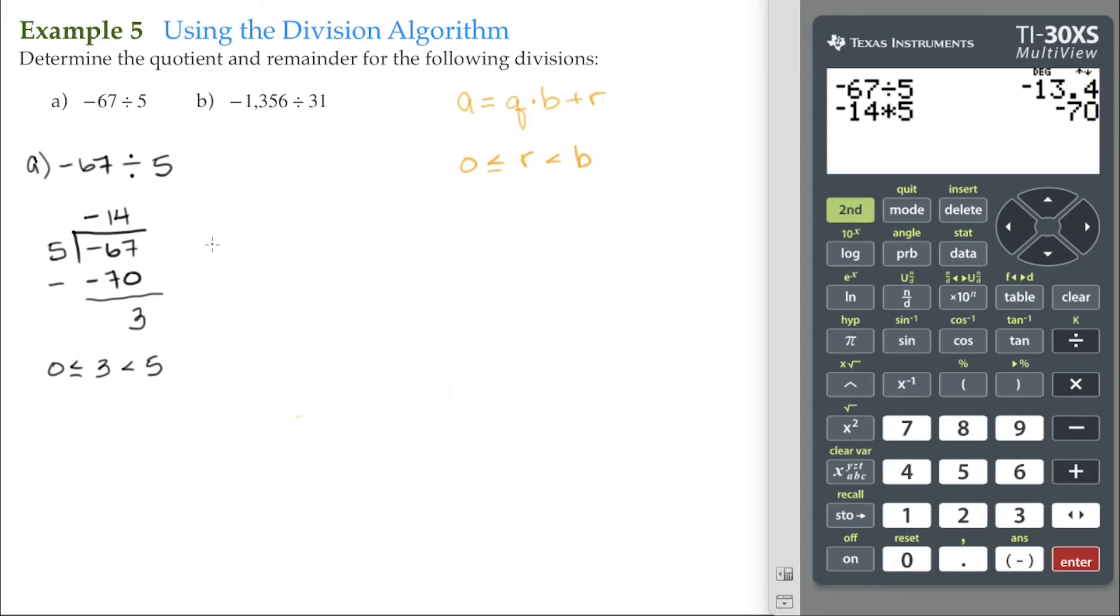Writing this in terms of the division algorithm: negative 67 equals negative 14 times 5 plus 3. Our quotient is negative 14 and our remainder is 3.